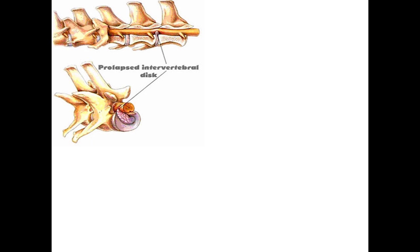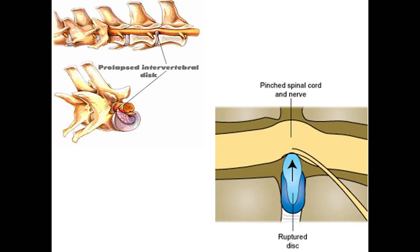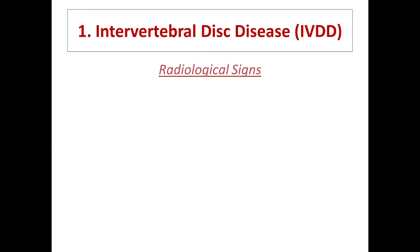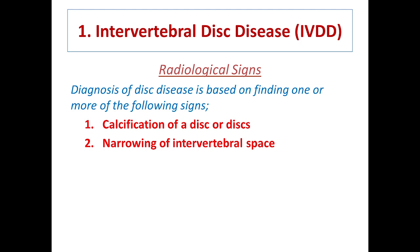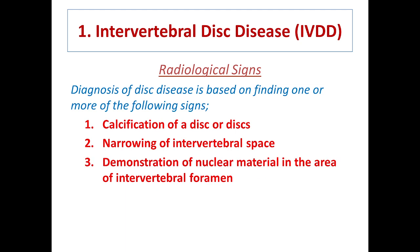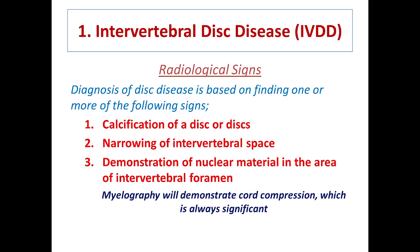In this schematic diagram you can see the ruptured disc which pinches the spinal cord and nerve. This picture shows a prolapsed intervertebral disc putting pressure on the spinal cord in the vertebral canal. Radiological signs include calcification of one or more discs, narrowing of the intervertebral space, and demonstration of nuclear material in the area of the intervertebral foramina.